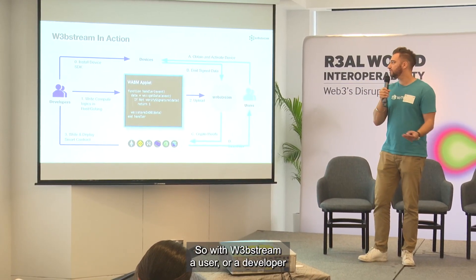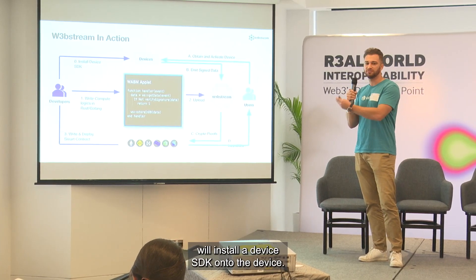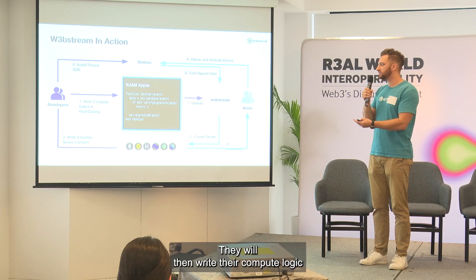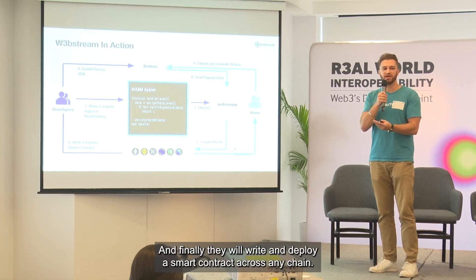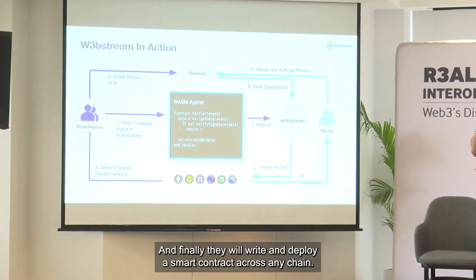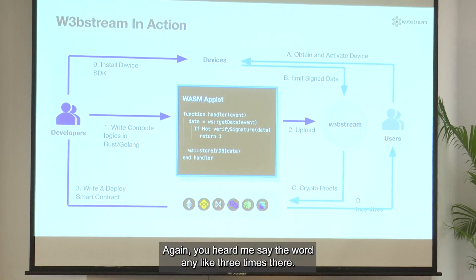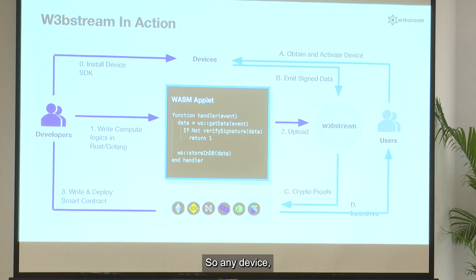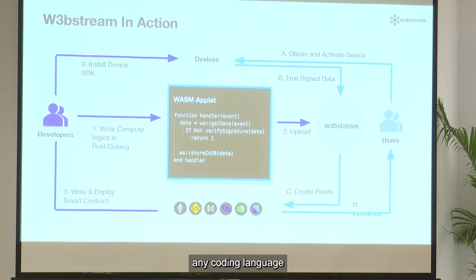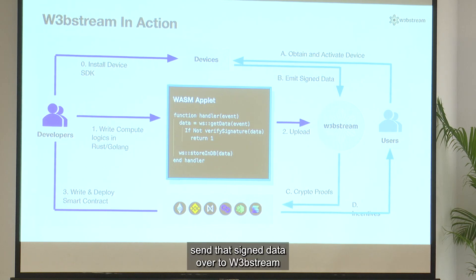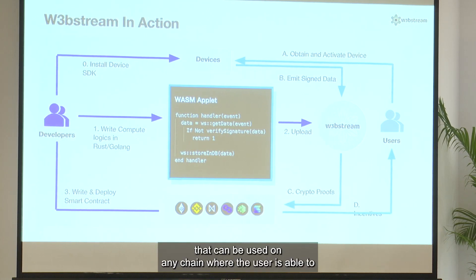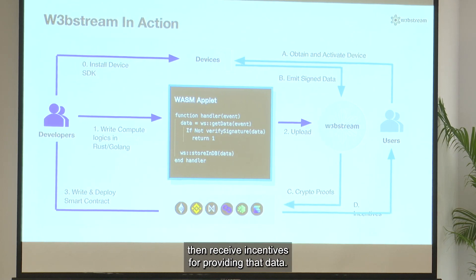With Web Stream, a developer will install a device SDK onto the device, write their compute logic in any language in a WebAssembly module applet, and finally write and deploy a smart contract across any chain. Any device, any coding language, any smart contract. From the user's perspective, a user purchases a device, sends signed data to Web Stream, generates cryptographic zero-knowledge proofs that can be used on any chain, and receives incentives for providing that data.